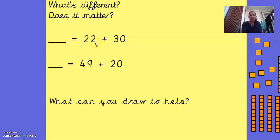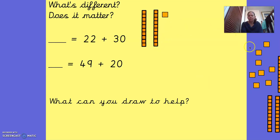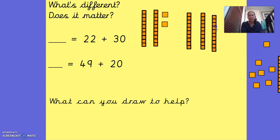So here we've got 22 plus 30 equals, and then we can work out the answer. We can use the Dienes to help us. So 10, 20, 21, 22. And then I'm going to add 30. So 10, 20, 30.